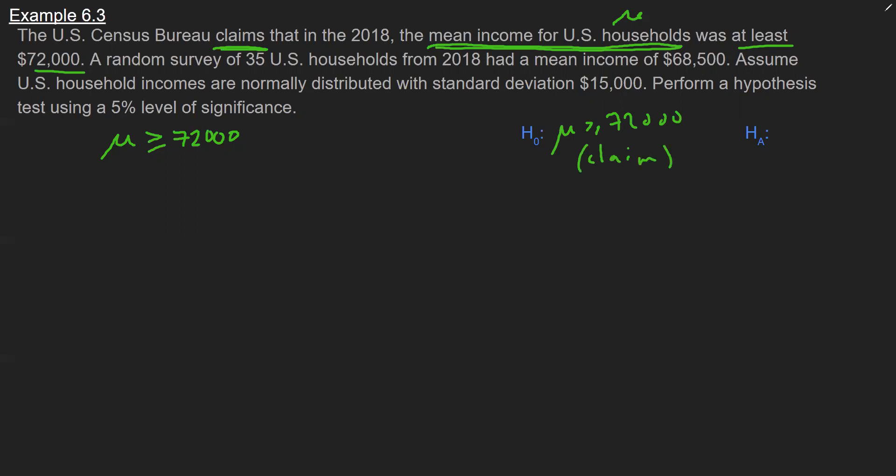And then the alternative, the H sub a here is the counter to the claim, sometimes known as the research hypothesis. We're going to see is there any evidence that this is not true. So the opposite is less than $72,000.